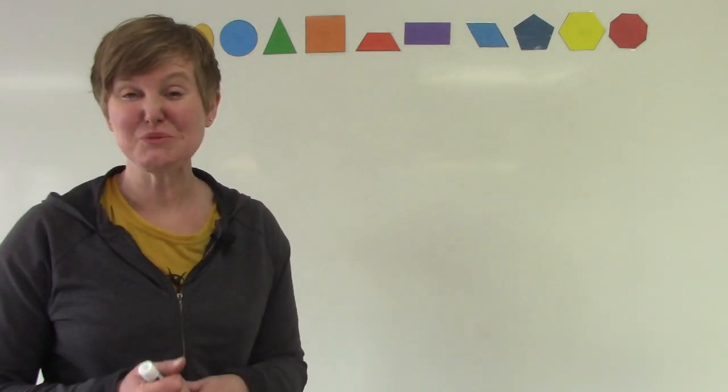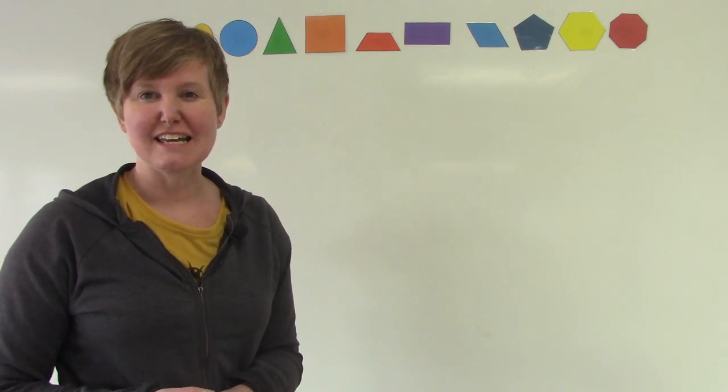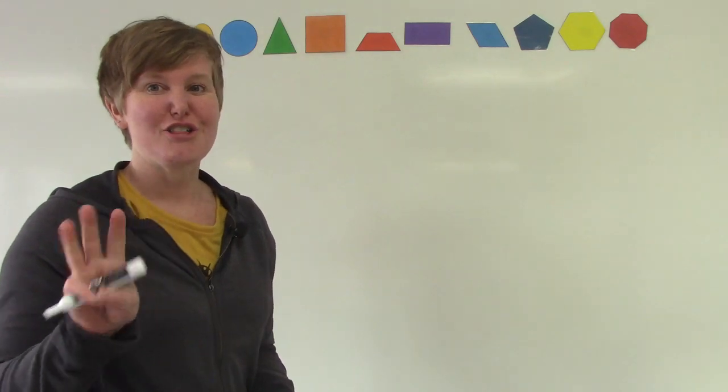All right, class. Our board is ready. The first shape that we're going to draw today has three sides. So on your paper, I want you to draw three dots.